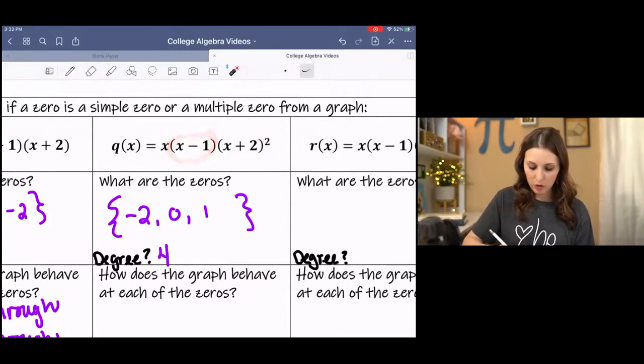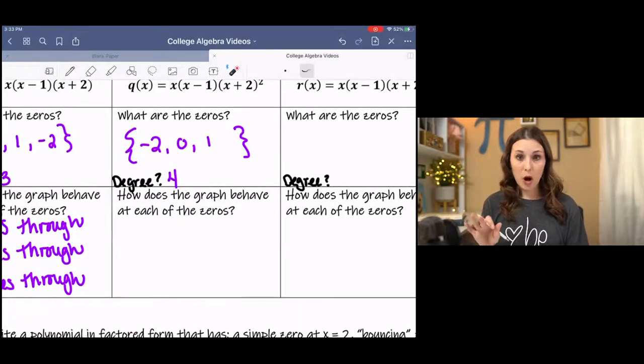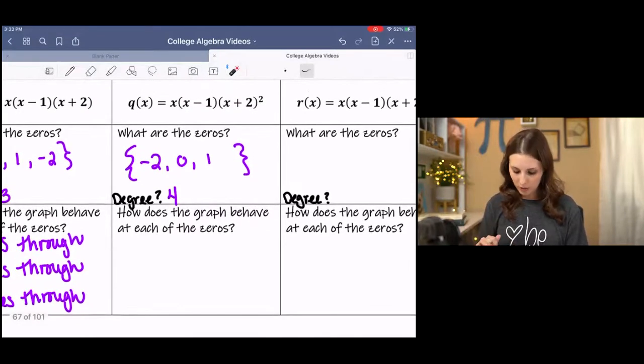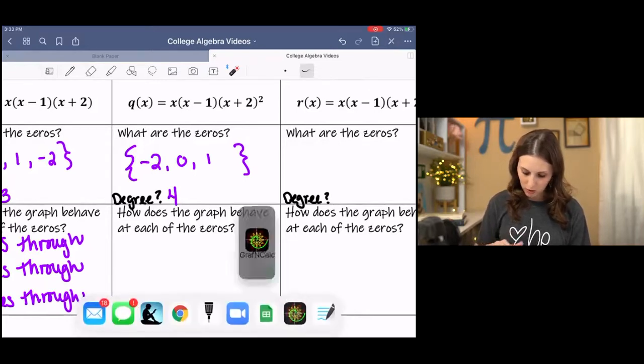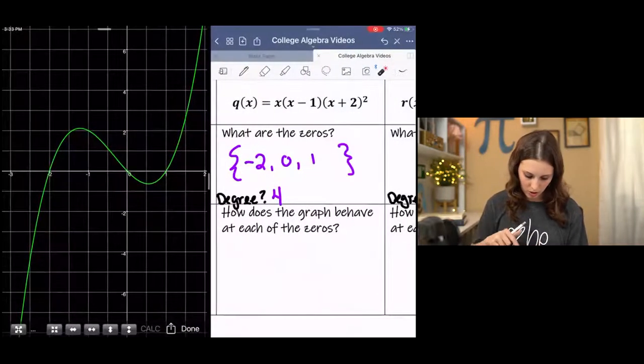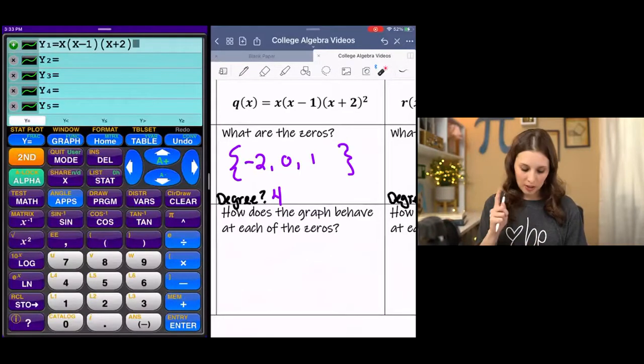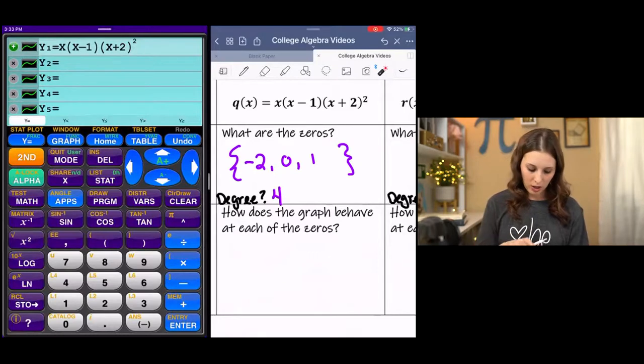So I have x squared times x times x is x to the fourth, which is a fourth degree. This is to the second power, this is to the first power, this is to the first power. So if I look at the graph, if you want to pause it, graph it, and state what happens at each zero, go ahead and do that. If you want to just watch, then you can watch me use this calculator. I'm going to go to y equals. It's the same function, except now I have a squared on that last factor. Hit graph.